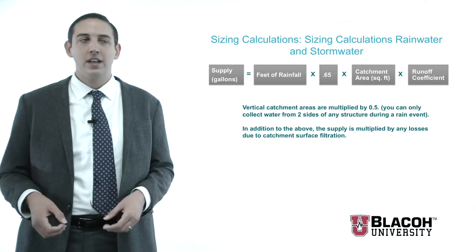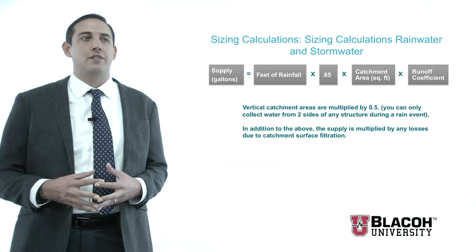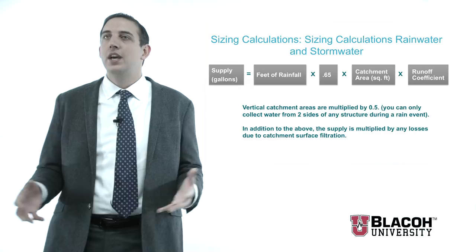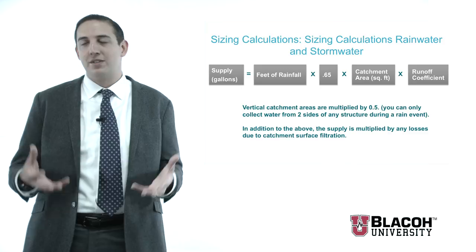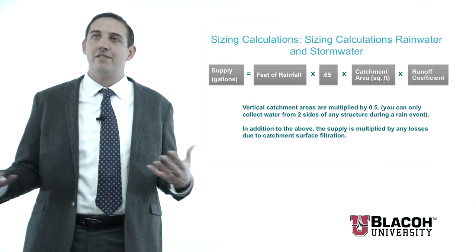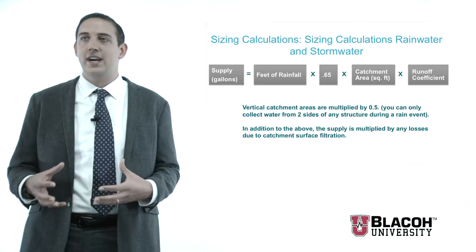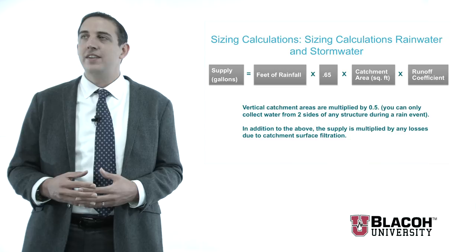The runoff coefficient comes into play during stormwater sizing. It dictates how much water you can lose based on what your surface area is. For a roof or even a parking lot, this number is generally one. If you're going to be catching off of another surface such as a sandy beach, you would end up with a coefficient of about 0.15 because you'd have so much more drainage. It should also be noted that you can only catch rainfall off of two sides of any vertical structure during any given precipitation event, so you can only account for about 50% of that overall vertical area.